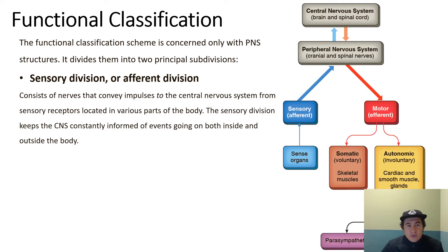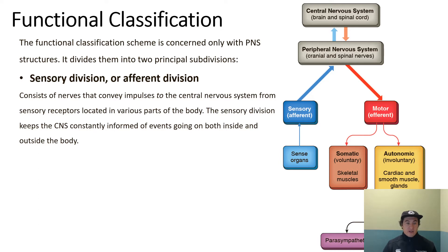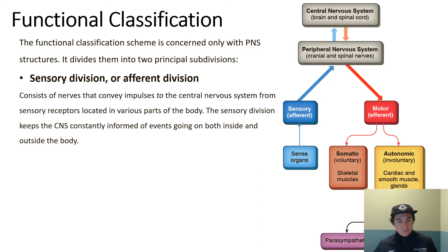If we look at functional classification — what actually happens — we have our sensory or afferent division. Afferent literally means to go towards, so messages are going towards the central nervous system. These nerves carry impulses to the CNS from sensory receptors. The word 'sensory' is a good way to remember this division. It keeps our central nervous system constantly informed about events going on both inside and outside of our body. On the sensory side we have our sensory organs and sensory afferent pathways.